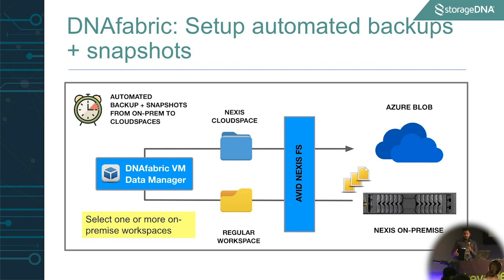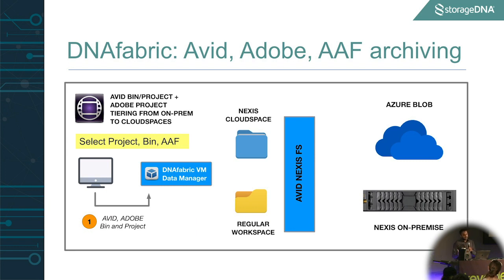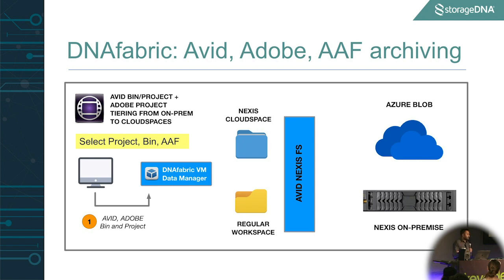Not only can Fabric give you backup to cloud spaces, but it can also snapshot your data in cloud spaces — giving you point-in-time previous versions of your projects or media files if you're making changes. The next thing it does is give you the ability to park projects or sequences from on-prem workspaces to cloud spaces. We support both Avid bins and projects. You can point us to a bin or a project, we'll parse it, collect the media files, and then move only that selectively into cloud space. We support Adobe Premiere as well. So it becomes a great tool to say: my project's done, I want to park it into the cloud. Just select the bin, the project, the finished product, and we'll only move those assets into cloud space.